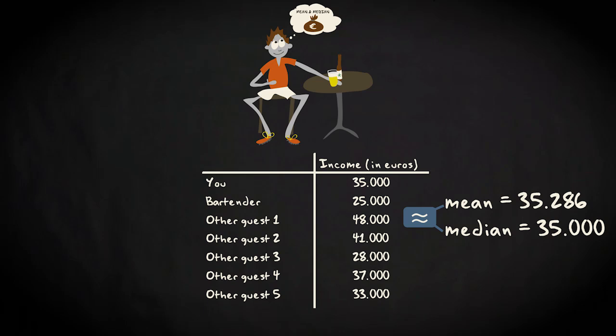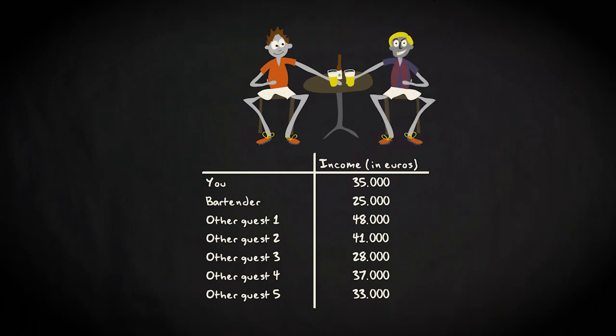They're pretty close to each other, and it doesn't matter much which one you use to describe the center of your distribution. But now imagine the famous football player, Franco Galton, walks into the canteen. Say he gets about 70 million per year. The median increases slightly, to 36,000.